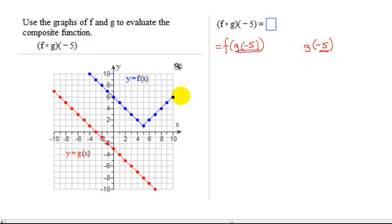That means when x is negative 5, figure out the value of the function g. So, looking down here, g is my red graph. So I need x to equal negative 5. So I go along here. Here's x equals negative 5. Go up to my graph. Here's my point. What is the y value? 2. So I know g of negative 5 is 2.